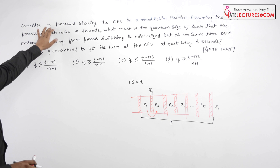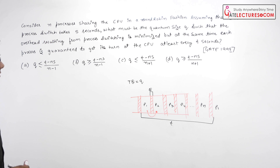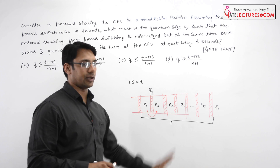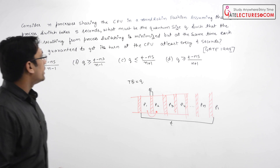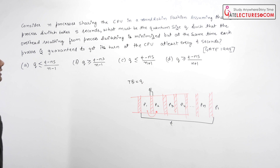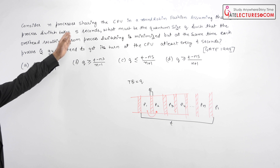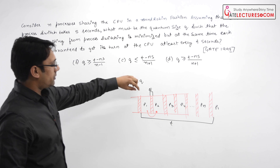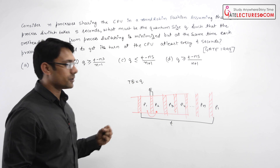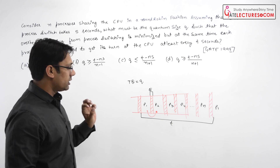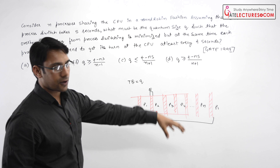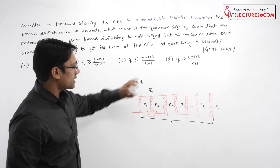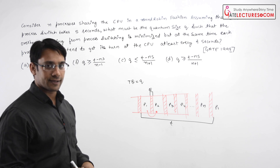They are saying: consider there are N processes, so we have processes P1 to Pn executing in the CPU in a round robin fashion. Assuming that each process switch takes S seconds — that means taking one process out of the CPU and putting the other process inside — this time is S seconds.